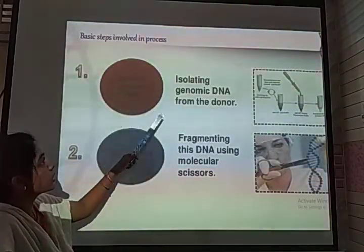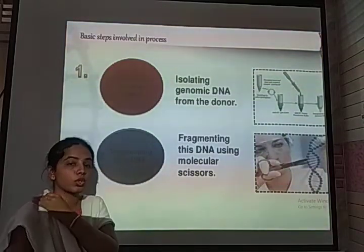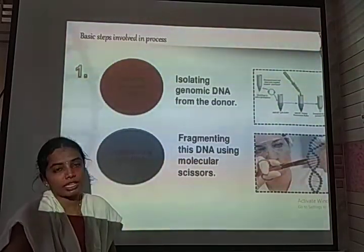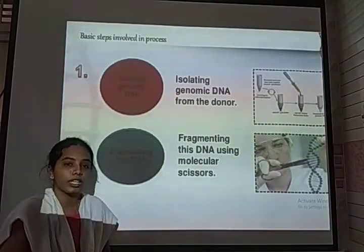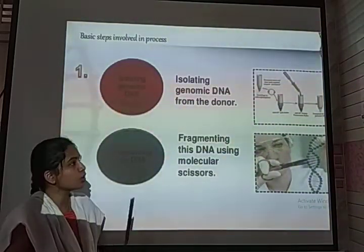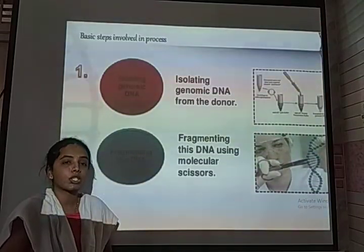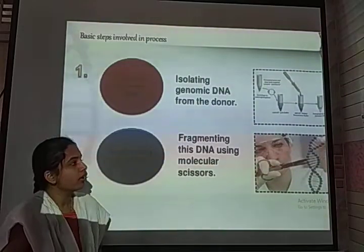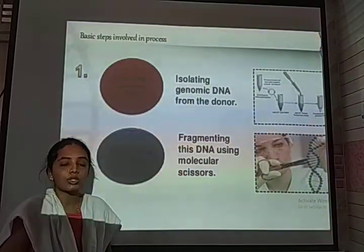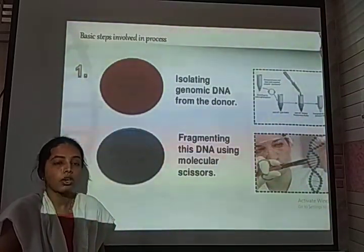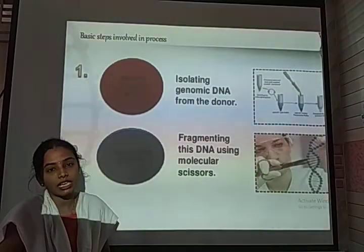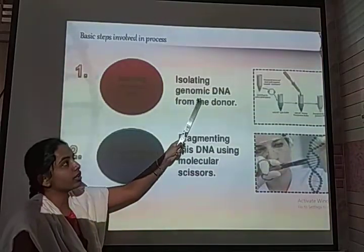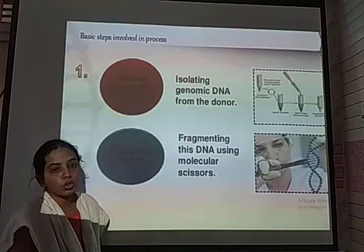The first step is isolation of genomic DNA from a donor, which may be plants, animals, bacteria, or fungi. For this extraction we need a digestive enzyme. For plant cells, a digestive enzyme called cellulase is needed to clear the cell wall. For bacteria, lysozyme enzyme is utilized. In fungi, chitinase enzyme is utilized as the digestive material. This is helpful for the easy extraction of genomic DNA from the cell.